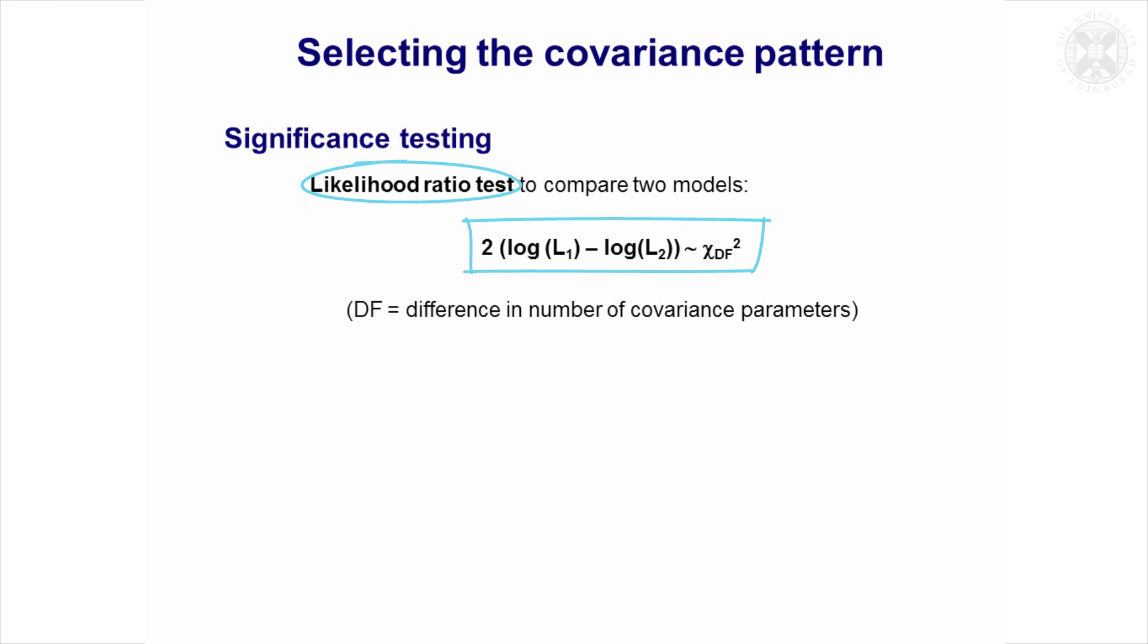The likelihood ratio test compares the likelihoods or the log likelihoods, takes twice the difference, and it assesses it against a chi-squared distribution. The number of degrees of freedom is the number of extra parameters in the more complicated model.